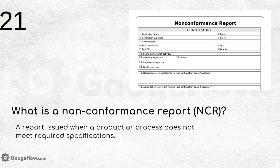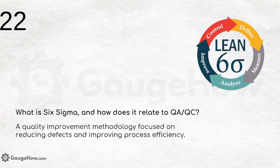What is a non-conformance report (NCR)? It is a report issued when a product or process does not meet the required specifications. The non-conformance report includes all relevant details as shown in the figure.